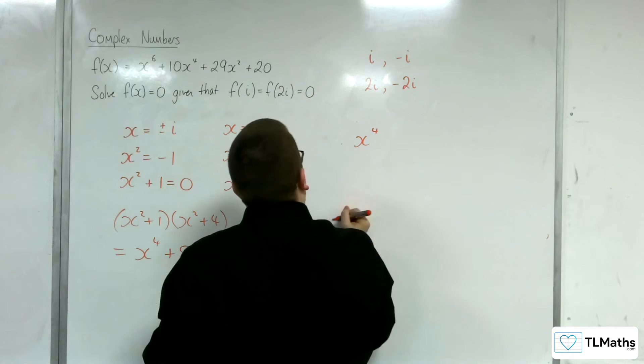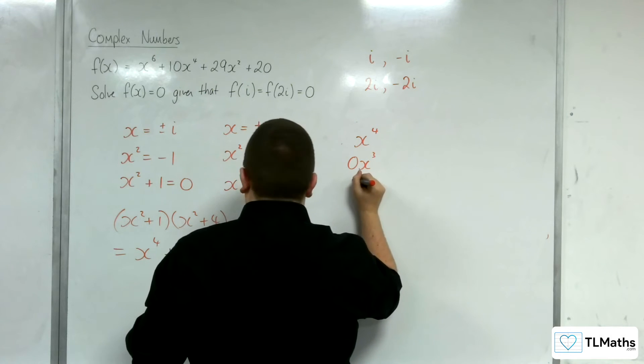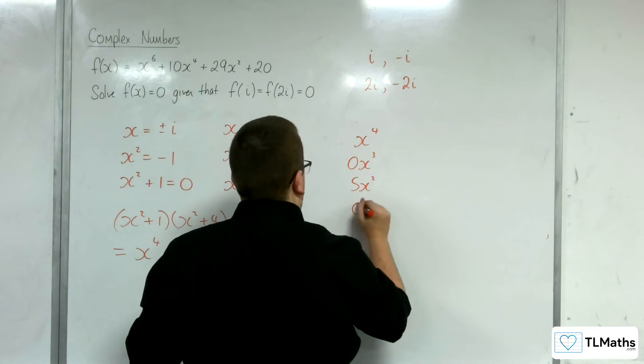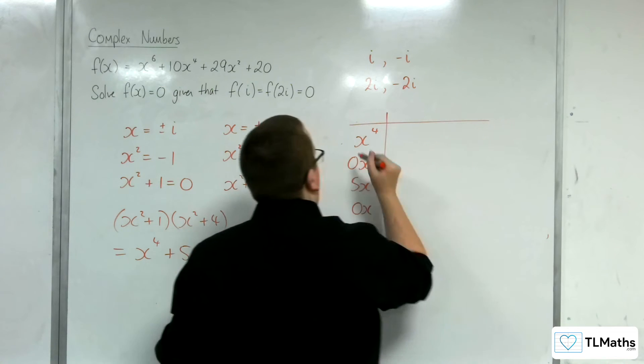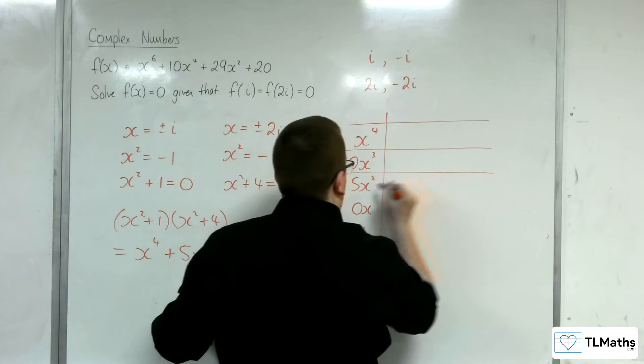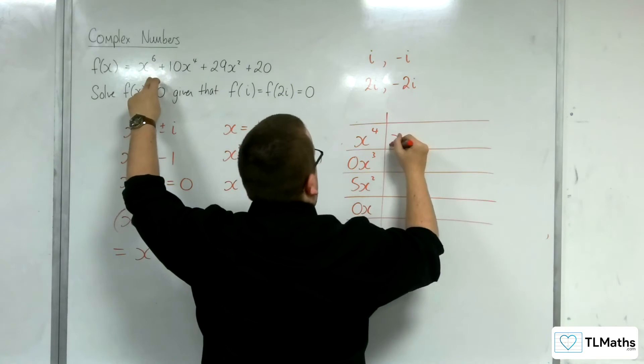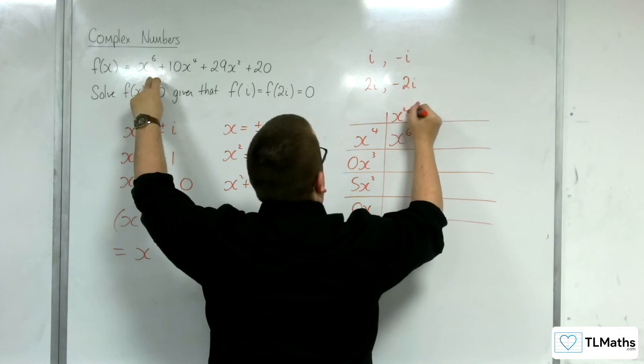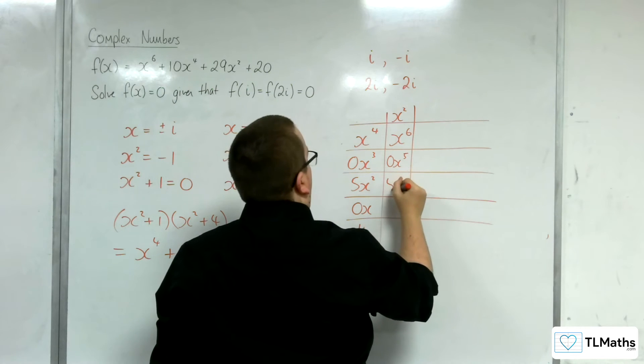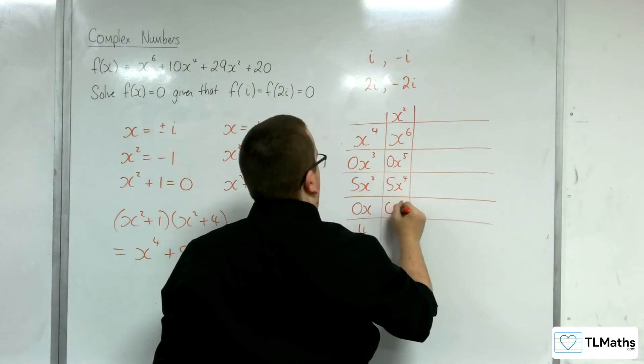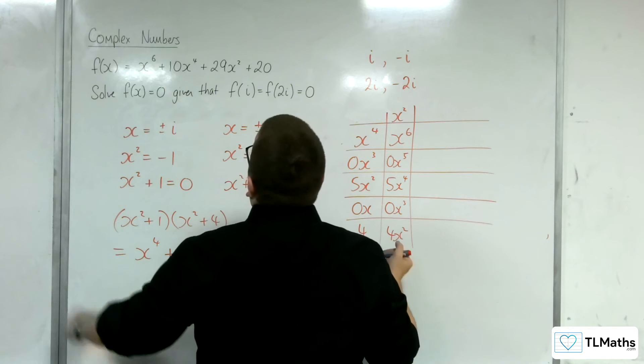x to the 4, I'm going to put in placeholders. It's good practice to do that. Right, I need x to the 6, so this must be x squared. So I'd have to have 0x to the 5, I would get 5x to the 4, I would get 0x cubed and 4x squared.